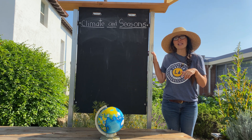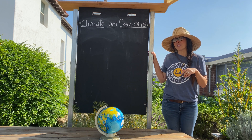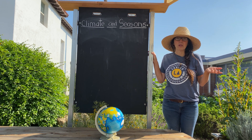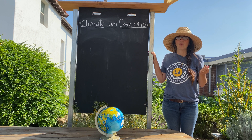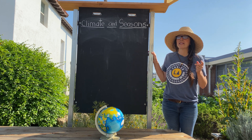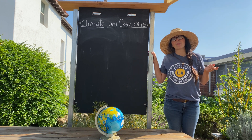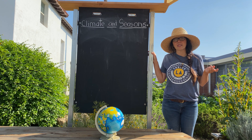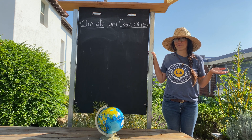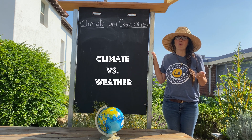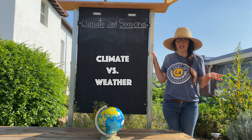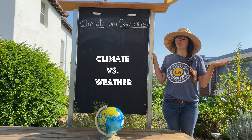In our last two lessons we learned about soil and parts of plants. Today we're going to be learning about climate and how it affects the plants that we eat throughout the year. We will start by learning about what the difference is between climate and weather.